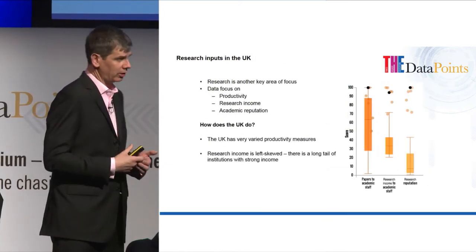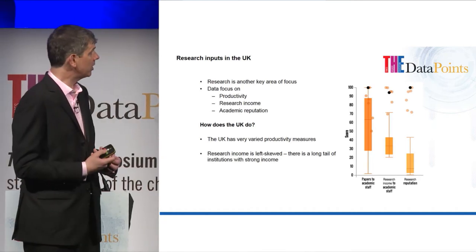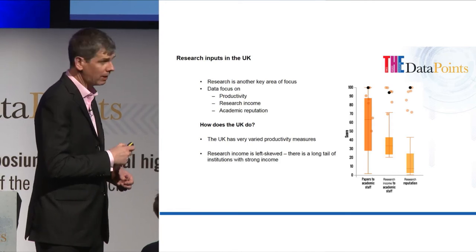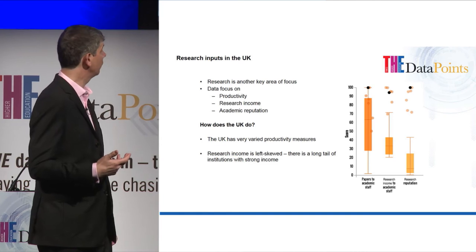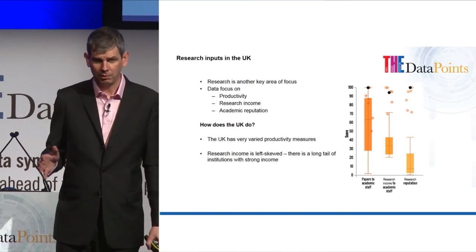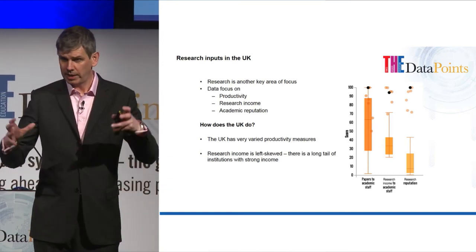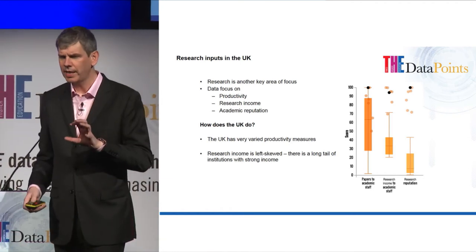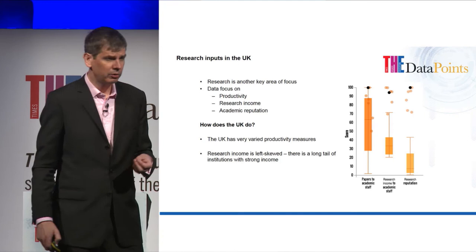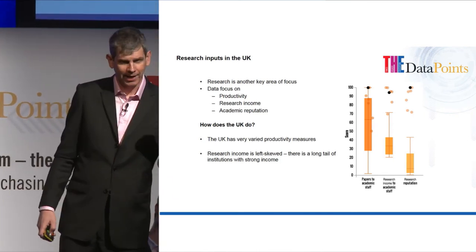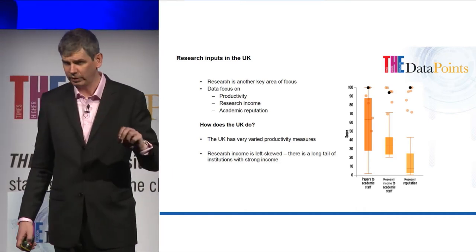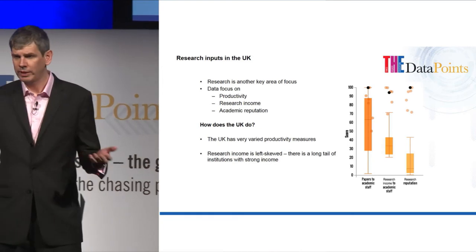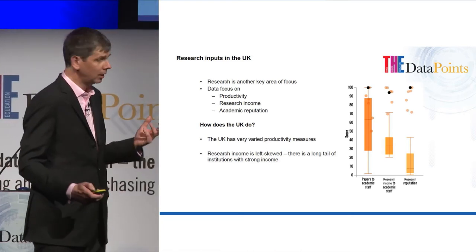Moving on to research inputs and outputs — how does the UK fare? We do okay in terms of research reputation, and some of our universities do exceptionally well. Research income, led by the REF, is left skewed — a large bulk of universities have a relatively similar amount, with a few at the top doing much better. On all financial measures, I've used purchase price parity to allow fair international comparisons. In papers to academic staff, we have a wide variation in the UK — some universities doing very well and others not so well.